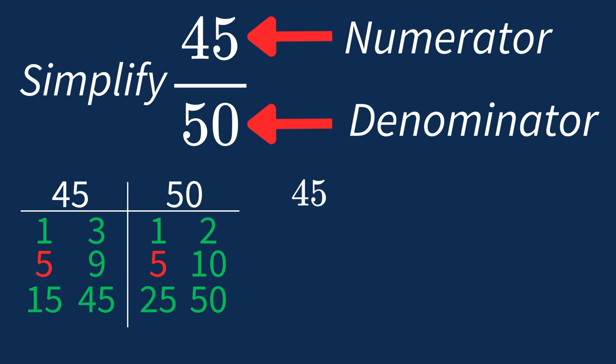Dividing the numerator, 45 by 5, gives us 9. Dividing the denominator, 50 by 5, gives us 10.